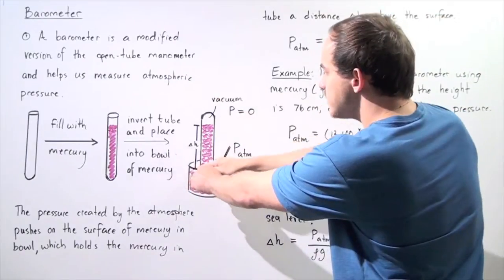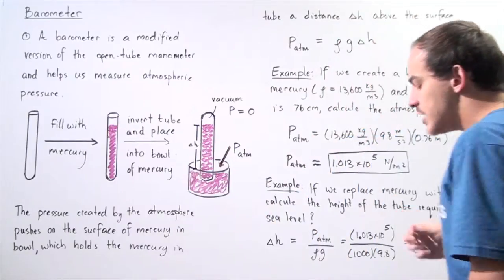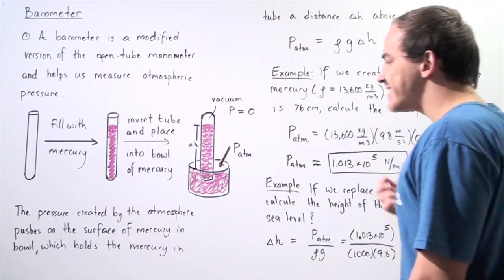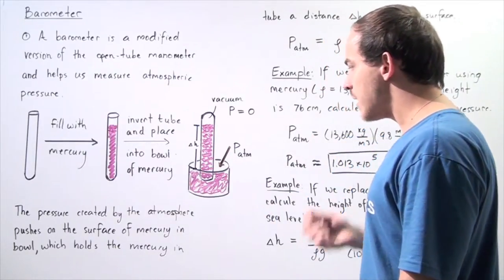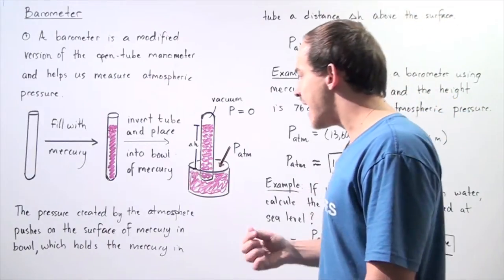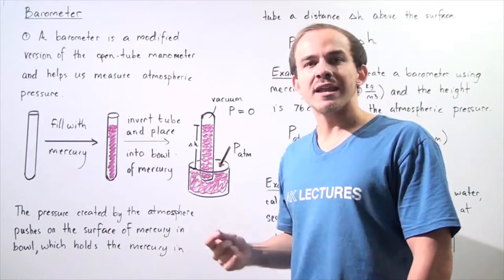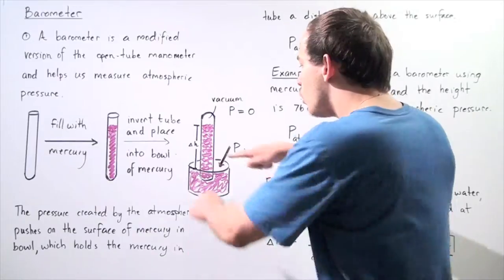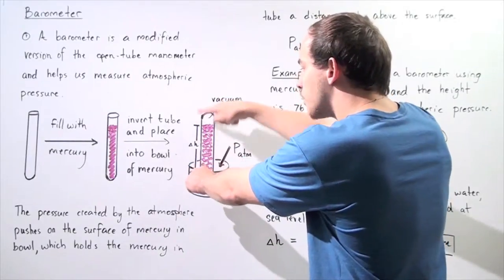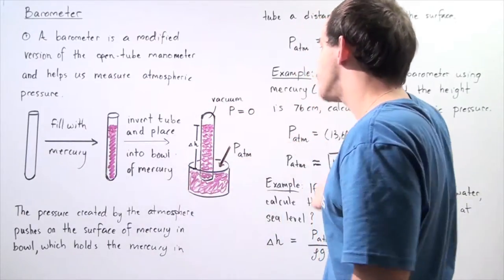This is our distance change in H. So that means if we want to calculate the atmospheric pressure, we simply have to calculate the pressure that is required to hold this distance of mercury along our tube.